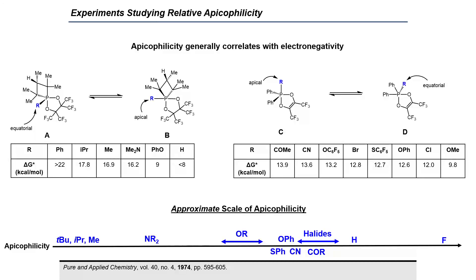NMR studies on stable phosphoranes have been used to empirically measure relative apicophilicities of substituents on phosphorus, as the results can be used to observe pseudorotation. One system used is a phosphatrane hexafluoroacetone adduct A, in which pseudorotation to form isomerized adduct B can be observed on the NMR timescale. The free energy of activation for pseudorotation varies with the apicophilicity of the R group. Another system used is a perfluorobiacetyl adduct C, which undergoes pseudorotation to form isomerized adduct D. Data from these studies, combined with data from other similar studies, have informed an empirically derived approximate scale of apicophilicity. It is important to note that this scale is not a strict guideline, but rather a general trend.